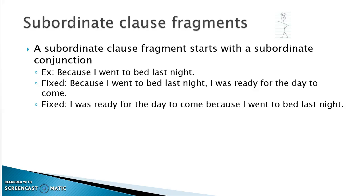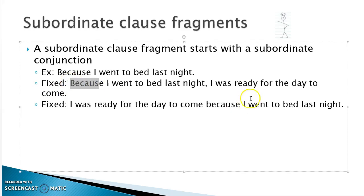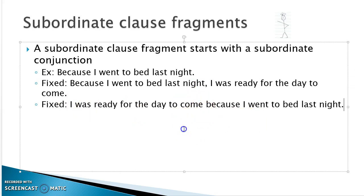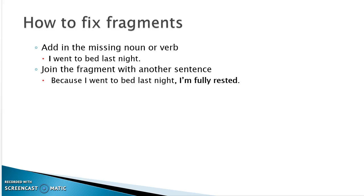A subordinate clause fragment starts with a subordinating conjunction — while, as, because, since, if, unless. For example, 'Because I went to bed last night' is a fragment — what happened? You need to complete it: 'Because I went to bed last night, I was ready for the day to come.' Alternatively: 'I was ready for the day to come because I went to bed last night.' To fix phrase fragments, add the missing noun or verb, or join the fragment with the sentence before or after it.